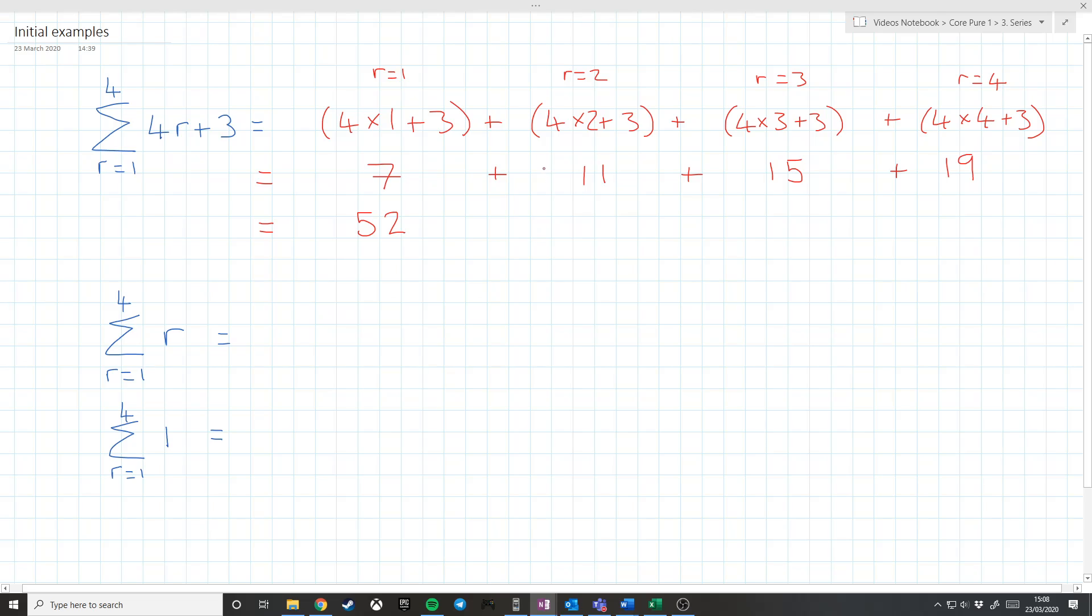And this would give me the sequence 7 plus 11 plus 15 plus 19, adding up to 52. But you might immediately spot that there are a couple of other things we could have done here. For a start, we can see that this is an arithmetic series with a equals 7 and d equals 4. So I could have worked out the sum of the first four terms of an arithmetic sequence, which, if you remember, and it's in the formula book, I could have put them into here. And that would have also given me 52.